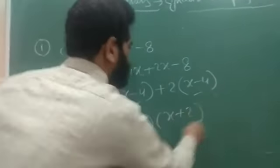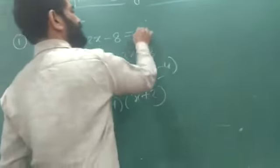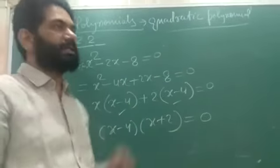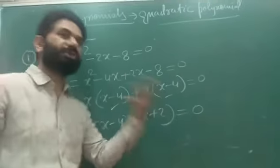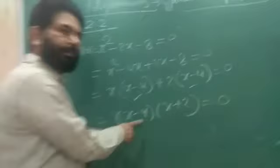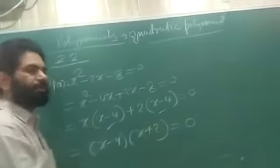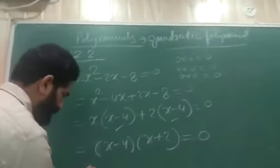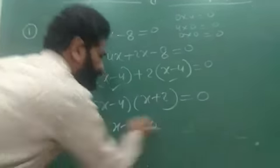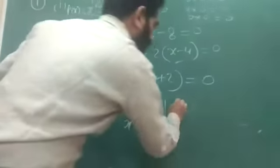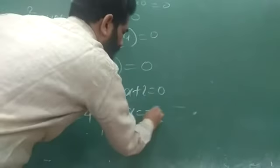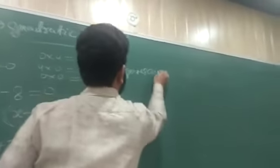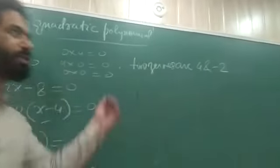We have (x − 4)(x + 2) = 0. If the product of two numbers is 0, then at least one of them must be 0. So either x − 4 = 0, giving x = 4, or x + 2 = 0, giving x = −2. Therefore, the two zeros are 4 and −2.